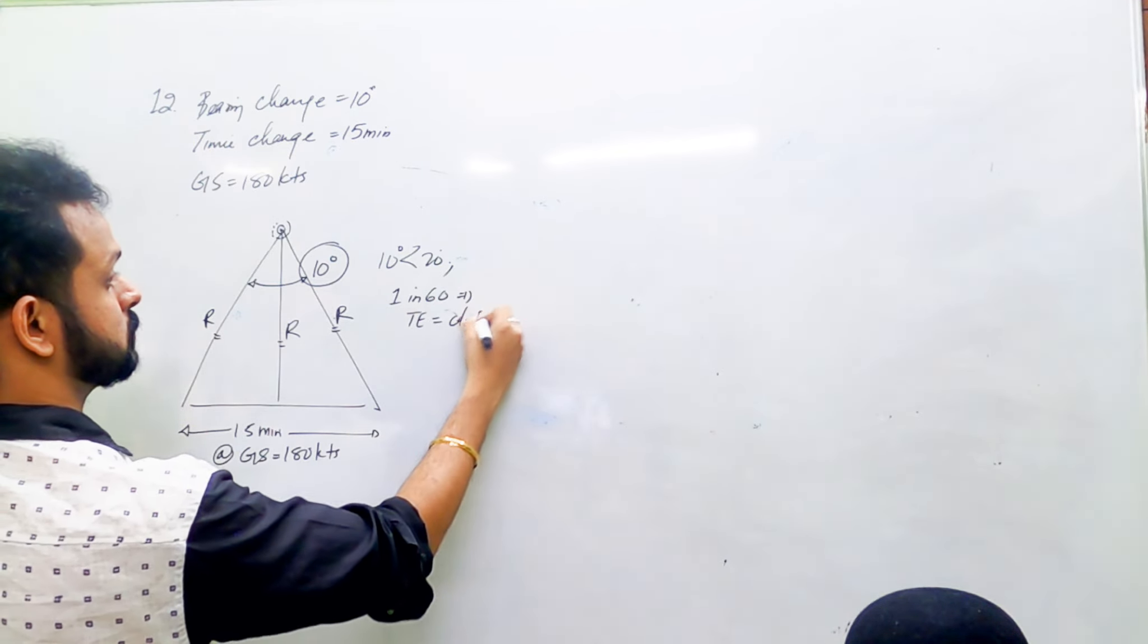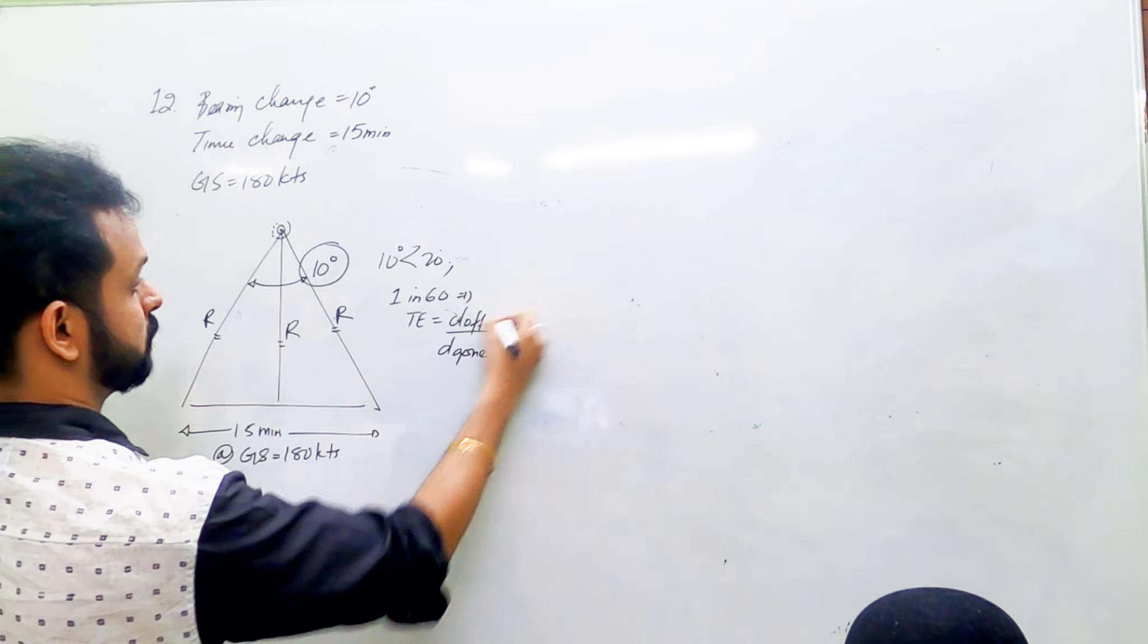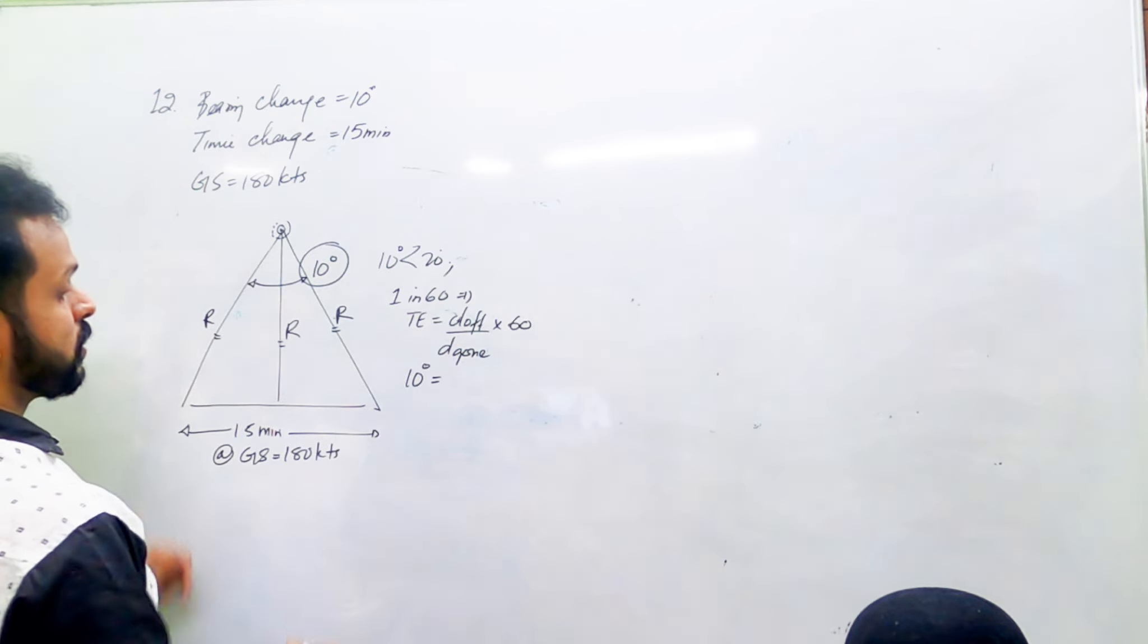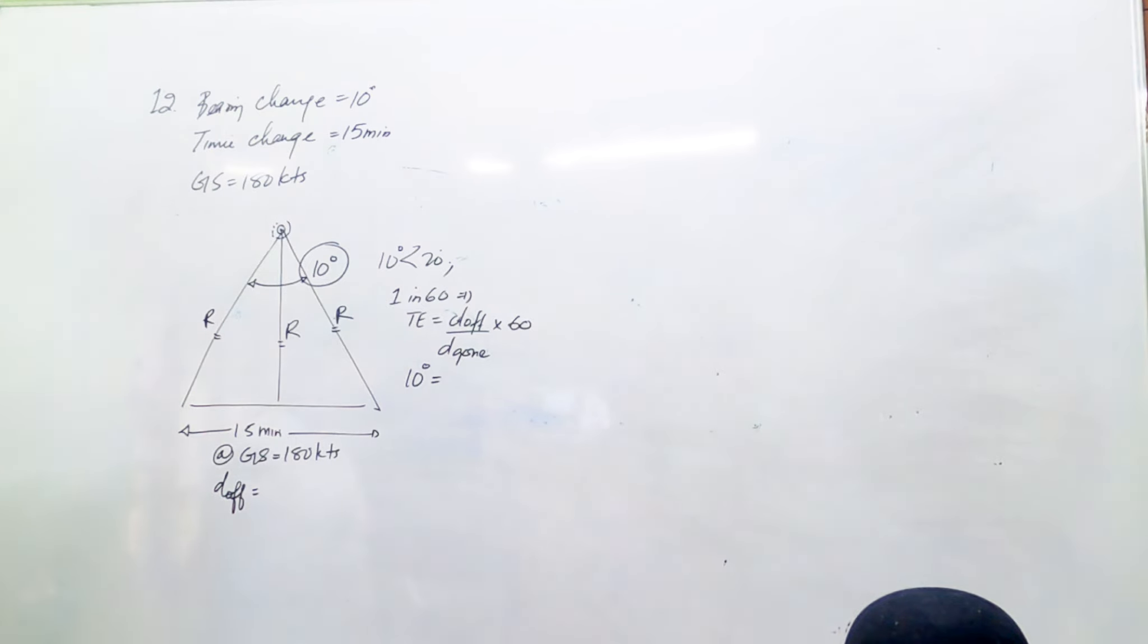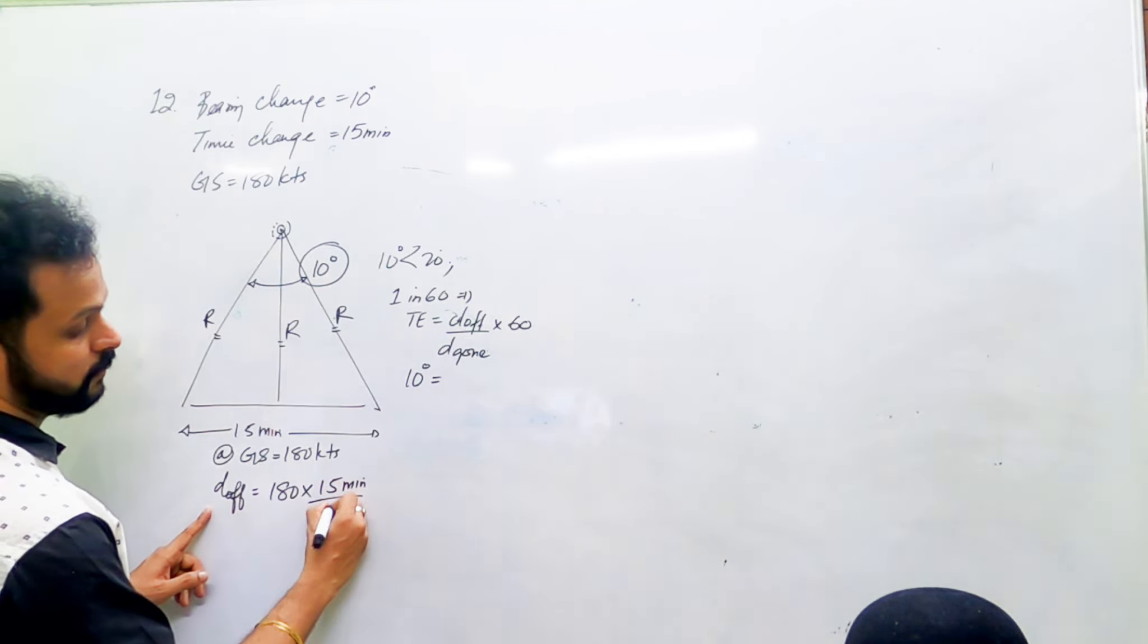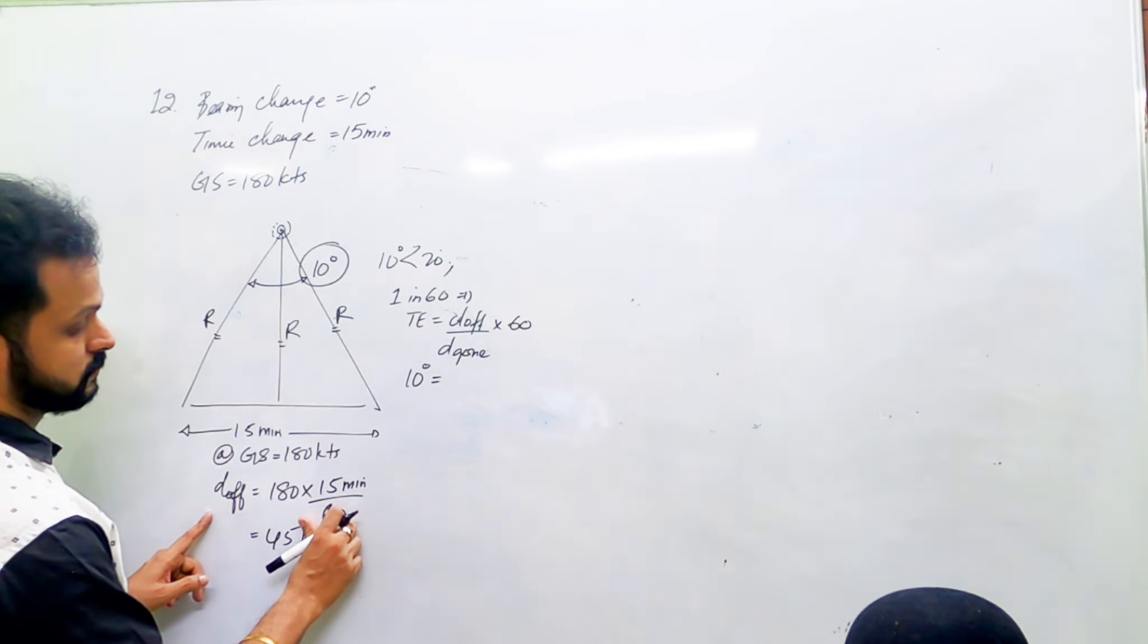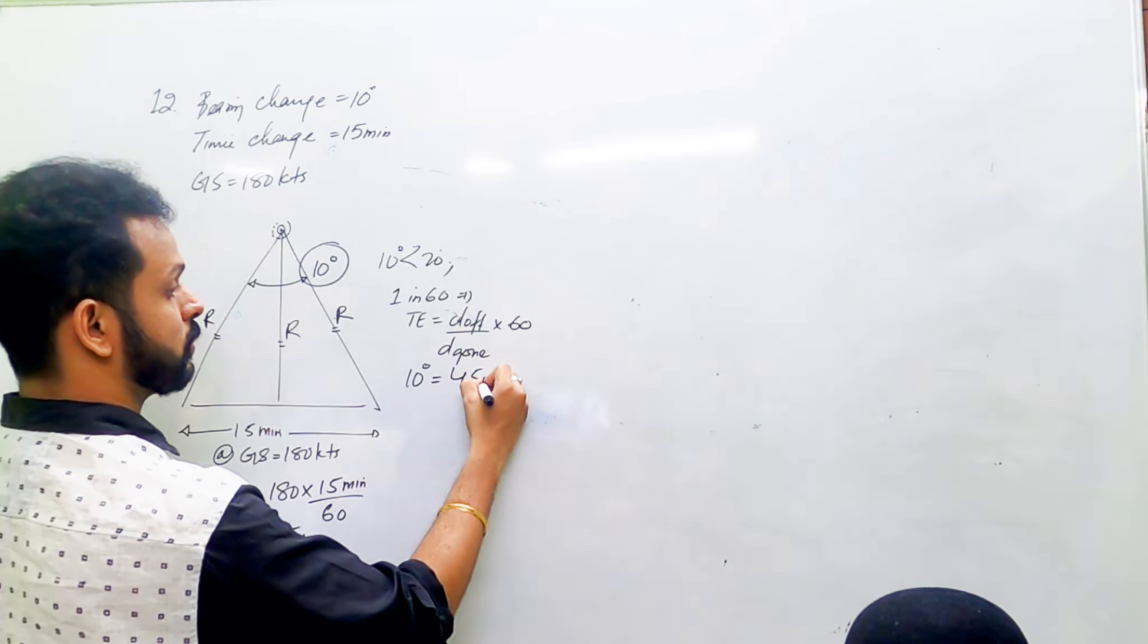Applying one in 60, track error equals distance OF divided by range times 60. The track error is 10 degrees. Distance OF is calculated as speed times time: 180 times 15 minutes. Remember it's in minutes, so convert to hours by dividing by 60. That gives 45 nautical miles for distance OF.